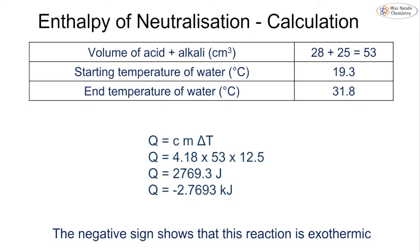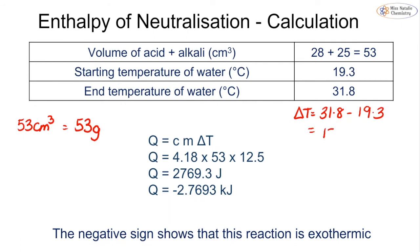For the calculation, the total volume is the volume of acid read from the graph (28 cm³) plus the volume of alkali (53 cm³), giving 81 cm³ = 81 grams. ΔT is the end temperature read from the graph (31.8) minus the starting temperature (19.3), giving 12.5. Substituting into Q = mcΔT gives −2.7693 kJ, with the negative sign confirming an exothermic reaction due to the temperature rise.